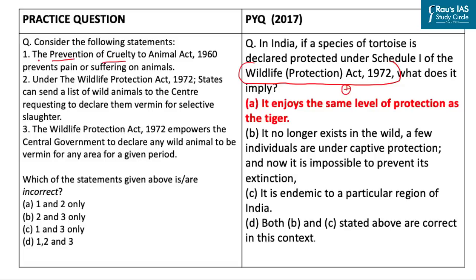The first statement is that the Prevention of Cruelty to Animals Act, 1960 prevents pain or suffering on animals. This statement is wrong — it should read 'unnecessary pain,' as the Act prevents unnecessary pain or suffering on animals. There can be genuine cases where certain animals like dogs and monkeys are sent for castration to control their population. So the first statement is wrong.